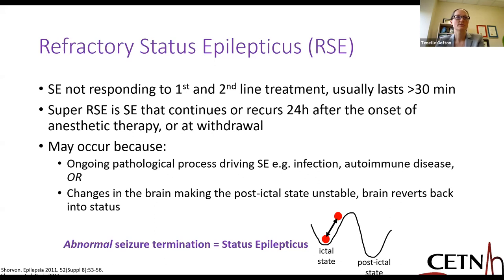There are two common reasons why refractory or super refractory status can happen. First, the process driving the status hasn't yet been resolved — for example, an underlying infection such as meningitis where antibiotics may not yet have full control, or an underlying autoimmune process that hasn't been identified and treated. Another major reason is that changes in the brain from prolonged status make it much harder to revert back into a post-ictal state. The longer status goes on, the harder it is to reach that threshold.